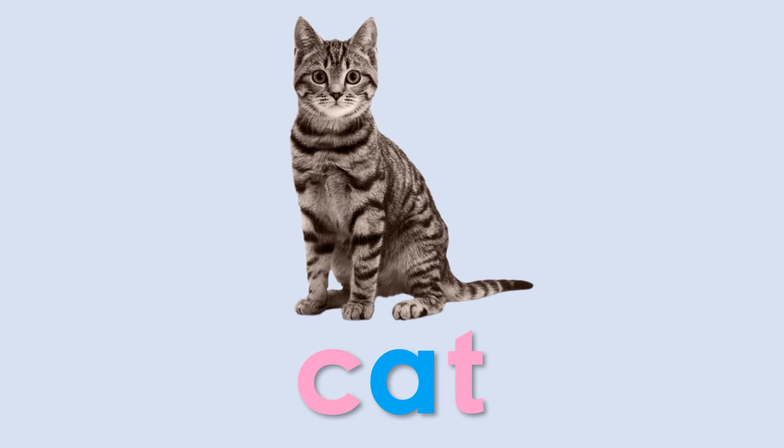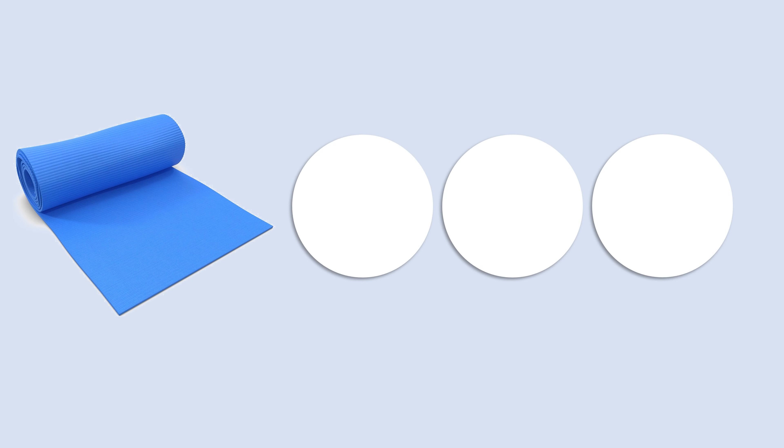Good job. Let's go to the next word. Here we have a mat. When I say mat, what's the first sound you can hear? Mat, mat. Yes, m sound. Very good. The first sound is m.